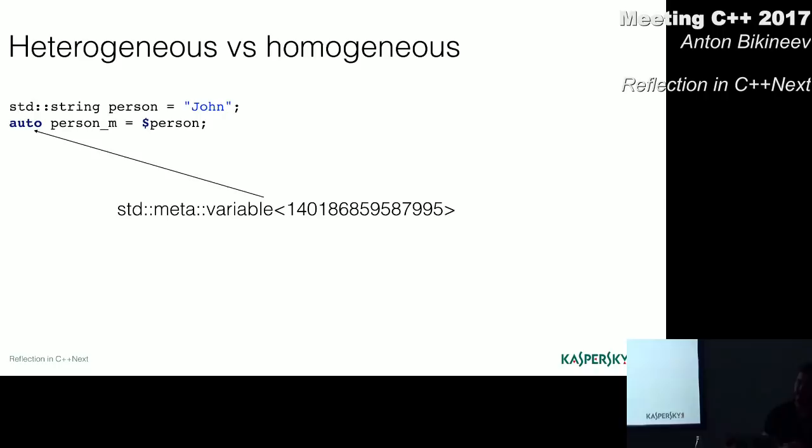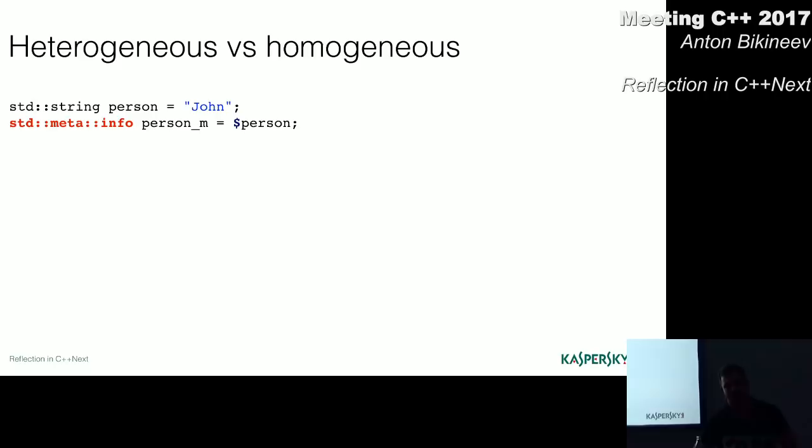So basically, the difference is that in the previous proposal with heterogeneous syntax, every time we reflect any metadata from an entity, the compiler instantiates a new type for us. And this is a problem, because every time you reflect data, you need to instantiate the meta object of it. And it might be very expensive and slow. This is exactly what the idea of homogeneous syntax tries to avoid.